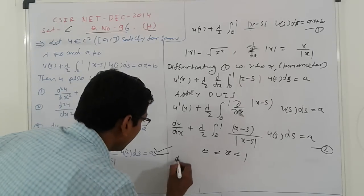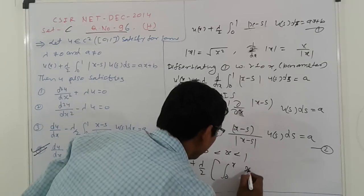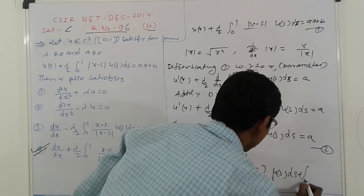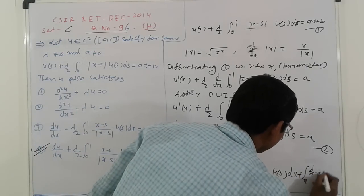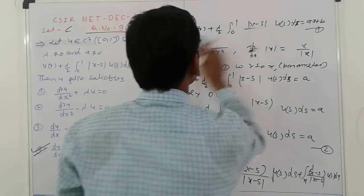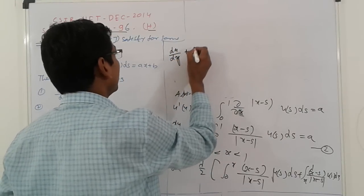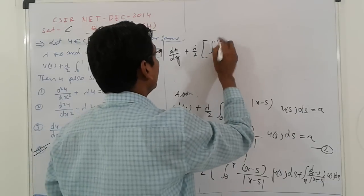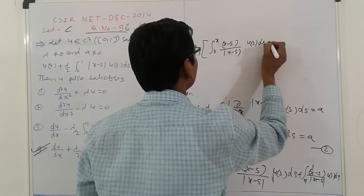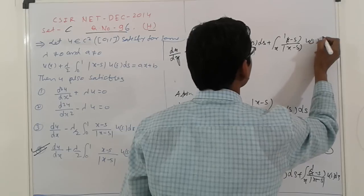So equation (2) becomes: du/dx + λ/2 · [∫₀ˣ (x-s)/|x-s| · u(s) ds + ∫ₓ¹ (x-s)/|x-s| · u(s) ds] = a. Now, for 0 to x: s < x, so |x - s| = x - s (positive). For x to 1: s > x, so |x - s| = -(x - s). That simplification is equation (3).